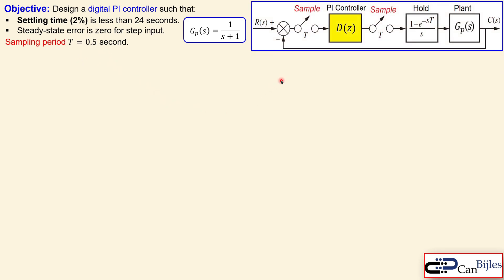Let's see what the diagram looks like. This is the PI controller, already given in the Z domain. You see a sampler in front and also at the end there's a hold, and also the plant in cascade. We have two samplers here because the input is given in the S domain (the Laplace parameter) and the output is also a Laplace parameter. So in order to have everything in the Z domain, we need to sample in front and also at the back of the PI controller. The sampler, hold, and plant together will be the Z transfer of this plant.